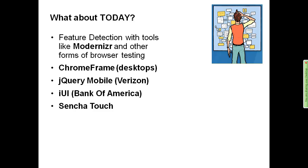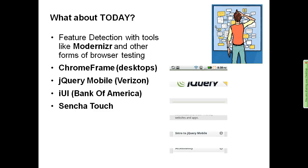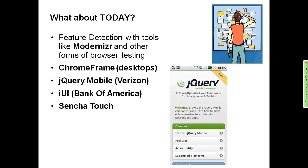Another thing I really like is jQuery Mobile — I'll show you an example in a moment. jQuery Mobile is used by Verizon. IUI is one that Bank of America has been using and it's pretty interesting, doing a nice job giving a mobile web experience. Sencha Touch has done very well overall in the marketplace as well.